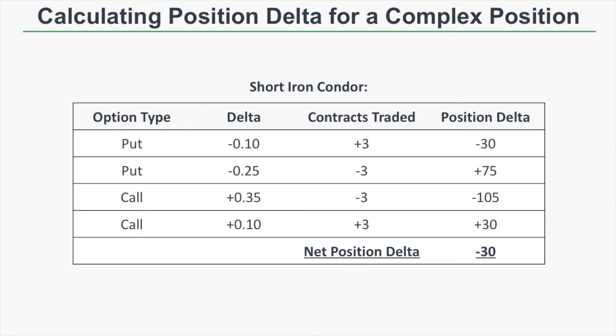That means in this iron condor position, we're expected to lose $30 if the stock price increases by $1, and gain $30 if the stock price decreases by $1.